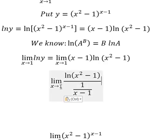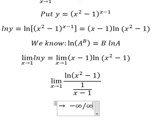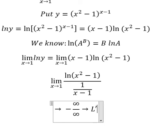Now when s approaches number 1, we put number 1 in here. The numerator gives ln(0), which we know is negative infinity. The denominator: 1 divided by 0 goes to positive infinity. So we get negative infinity over positive infinity. In this situation we can use L'Hôpital's rule.